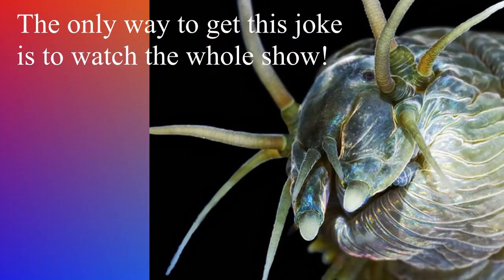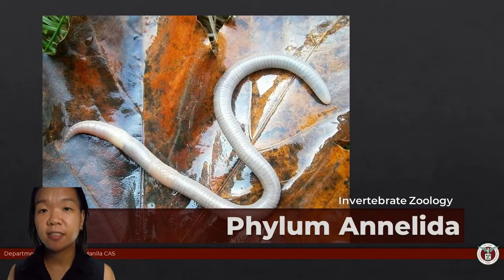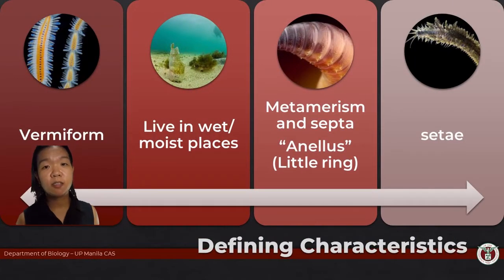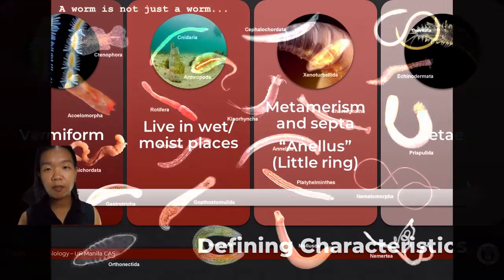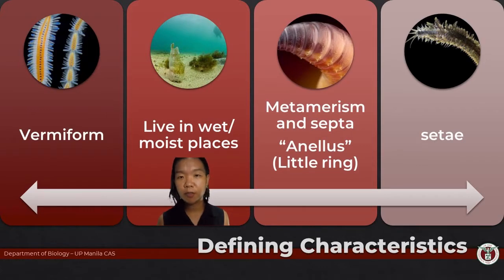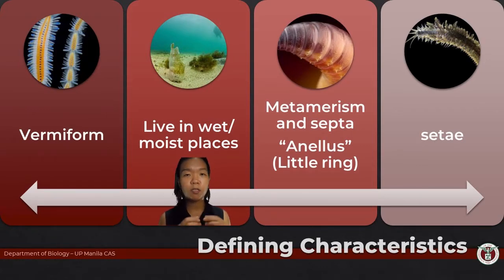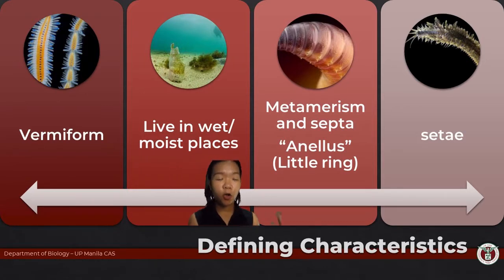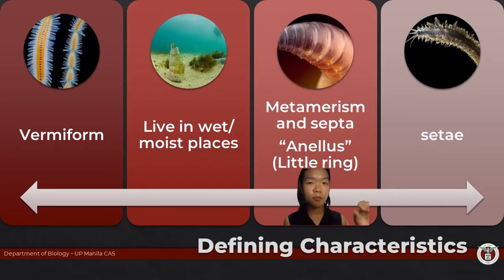It is Annelida, segmented worms. Let's start — the last three phyla we've discussed were all worms. In terms of body plan, these guys are what we call vermiform, tubular — they are longer than they are wide. For annelids, particularly even the ones that live in terrestrial environments, they are restricted to relatively moist places. They do have a cuticle but it's still permeable to gases and to water, so they can still lose water to the environment.